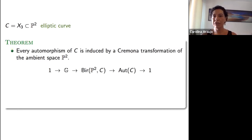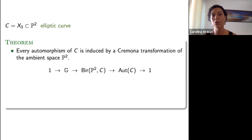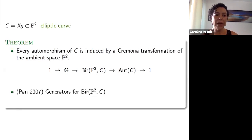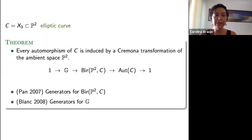In both cases, the subgroup of projective automorphisms is always finite, so one may ask where the other automorphisms come from. For an elliptic curve, every automorphism of C is induced by a Cremona transformation of the ambient P^2. We have an exact sequence involving the decomposition group of the cubic — Cremona transformations of the plane that stabilize the cubic — surjecting onto the automorphism group of the curve, with kernel called the inertia group.